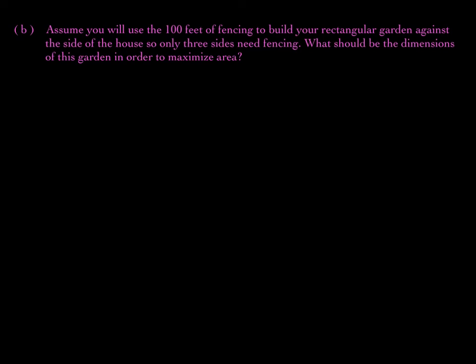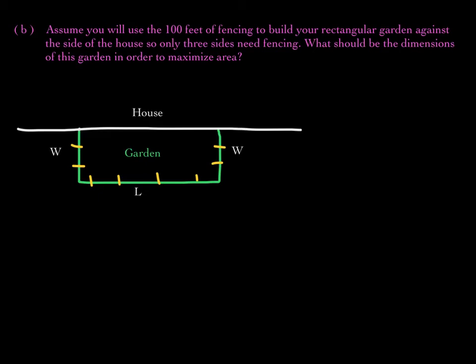Let's look at this last part. Assume you will use the 100 feet of fencing to build your rectangular garden against the side of the house, so only three sides need fencing. What should be the dimensions of this garden in order to maximize the area? Here's our garden — we're using the side of the house to enclose one side. So we only have a width, a width, and a length. We have 100 feet of fencing, so 2w plus 1l equals 100.